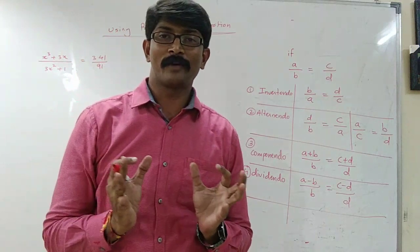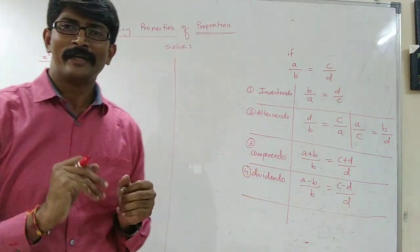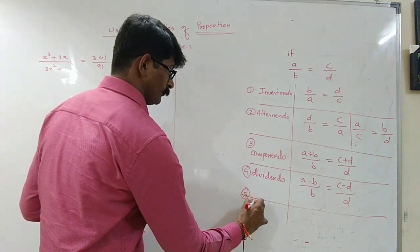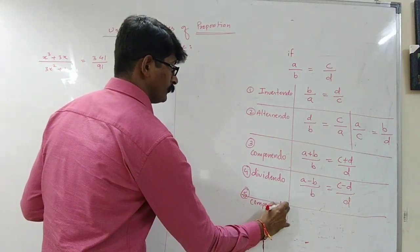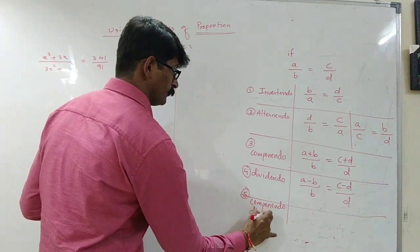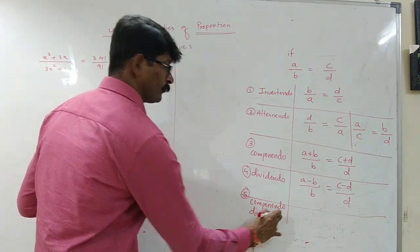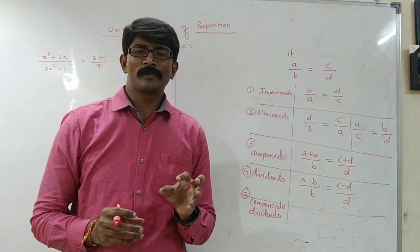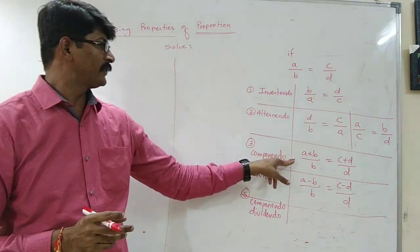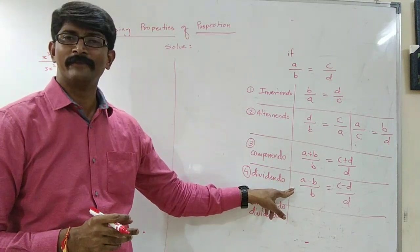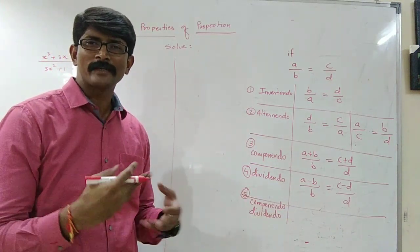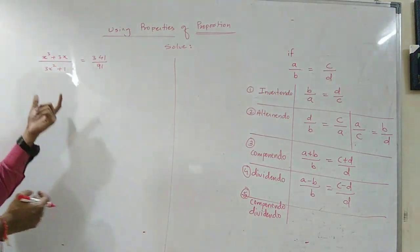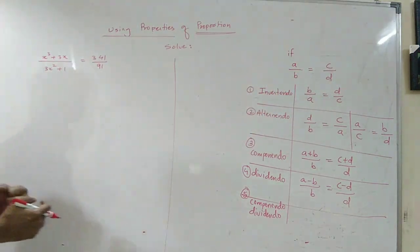The last and very important property is called Componendo-Dividendo. This process is nothing but dividing Componendo by Dividendo. I will teach you the rule and then show you how to use it in one particular sum.